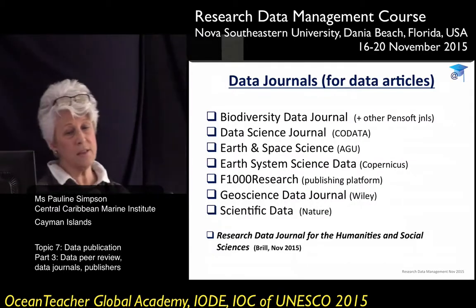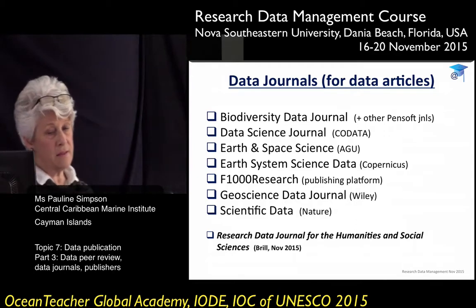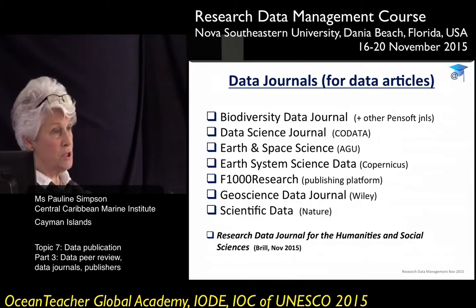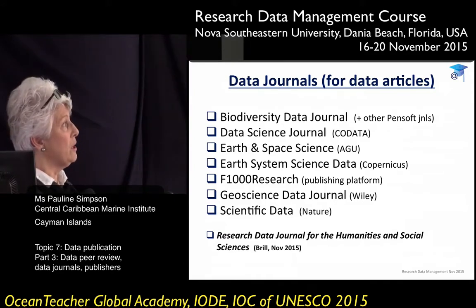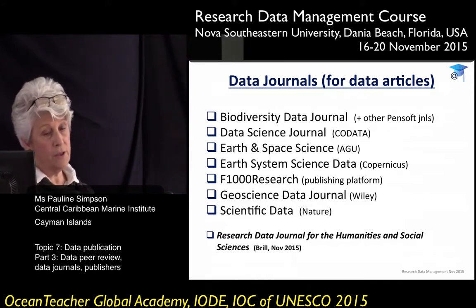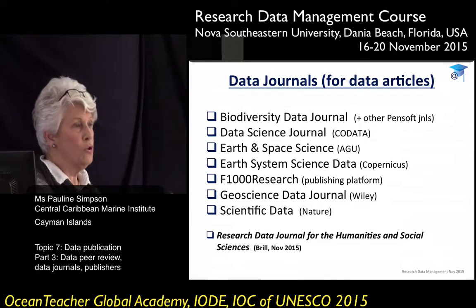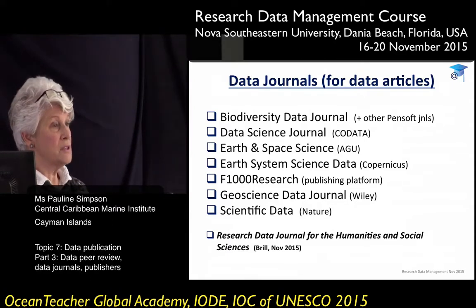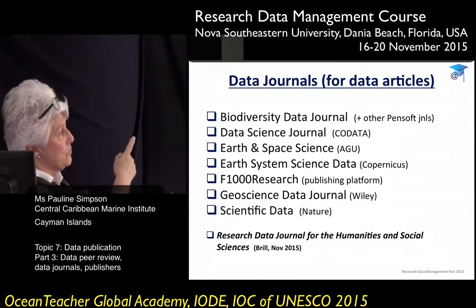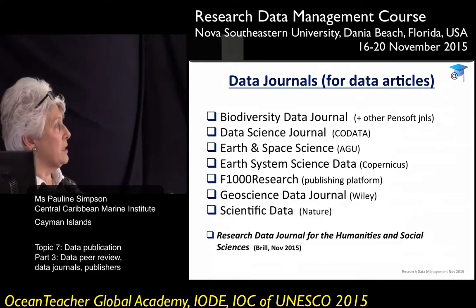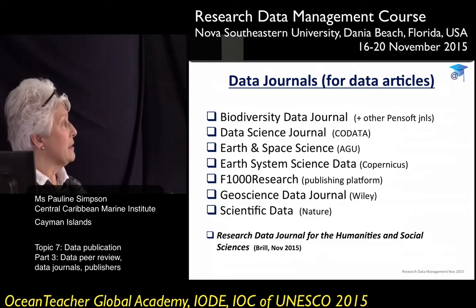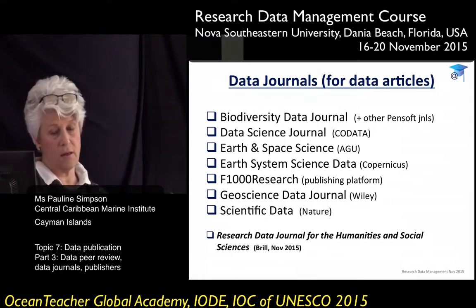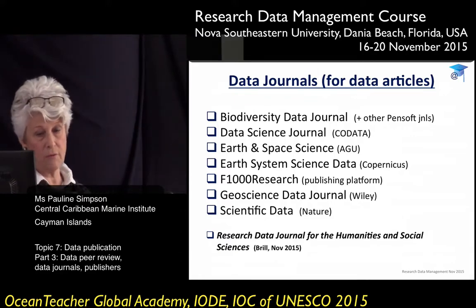There are a lot of data journals, and many of them are from big publishers like the American Geophysical Union, Wiley, and Nature. More and more are emerging — I literally got an email this week about a new data journal for the humanities coming out this month, from Brill, which is another big publisher.